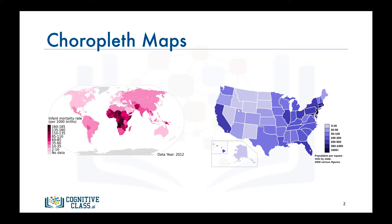The higher the measurement, the darker the color. The map to the left is a choropleth map of the world showing infant mortality rate per 1,000 births. The darker the color, the higher the infant mortality rate. According to the map, African countries have very high infant mortality rates, with some reporting a rate higher than 160 per 1,000 births.